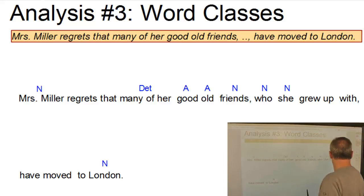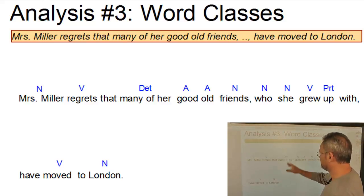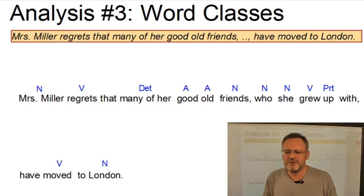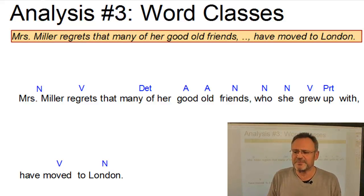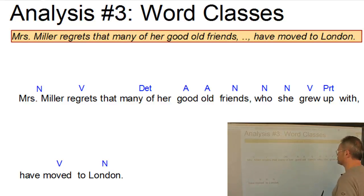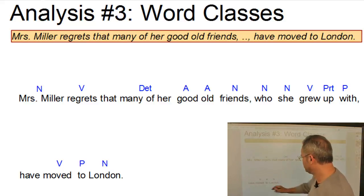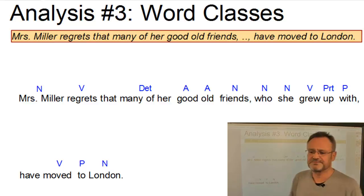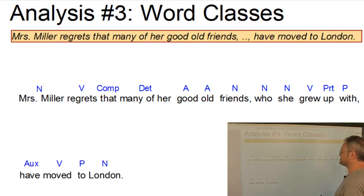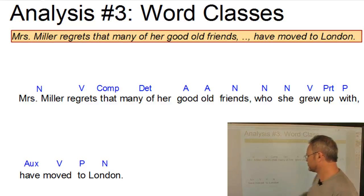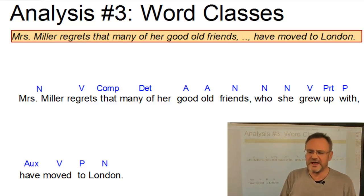And four verbs: regrets and moved are standard verbs, and grew up is a phrasal verb consisting of the verb itself and the particle up. Furthermore, our sentence contains two prepositions — with and to — and the complementizer that, as well as an auxiliary have in have moved.